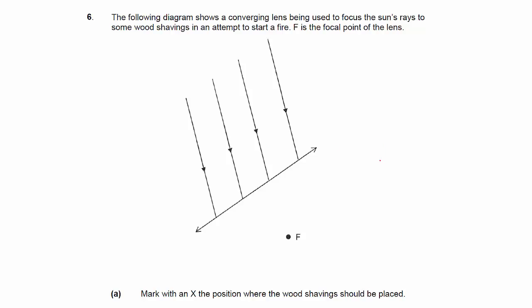This last question is actually pretty challenging. You use a converging lens to focus the sun's rays — the sun is considered to be at infinity, so the light rays are parallel to each other. The task is to focus the sun's rays onto some wood shavings to start a fire, and F is the focal point of the lens. Mark with an X the position where the wood shavings should be placed. A beginning student may be tempted to say that all light rays go to the focal point of the lens, but actually that's not true, because the light rays are not parallel to the principal axis.